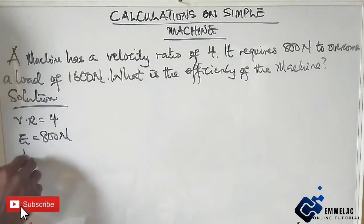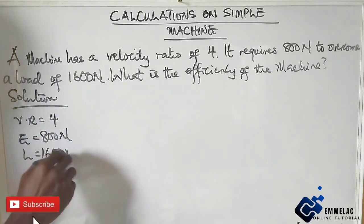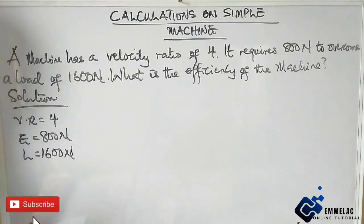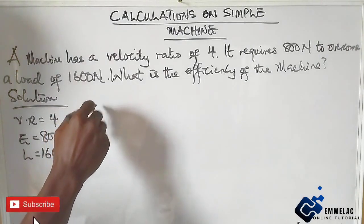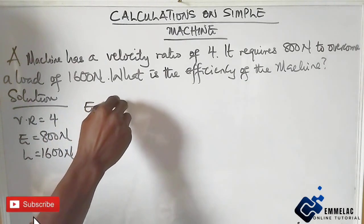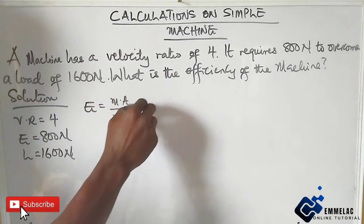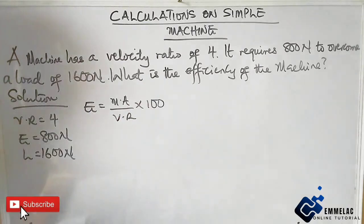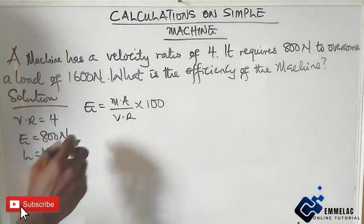Our load is 1600 Newton. We know that efficiency equals mechanical advantage over velocity ratio times 100. Unfortunately, we are not given the value of mechanical advantage, but let us recall the formula.